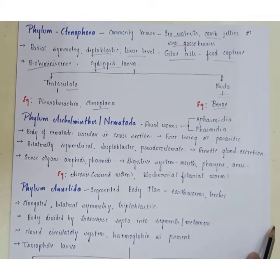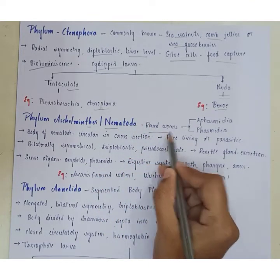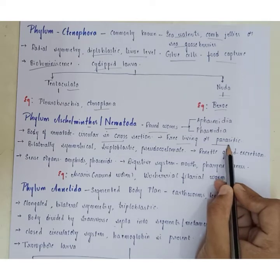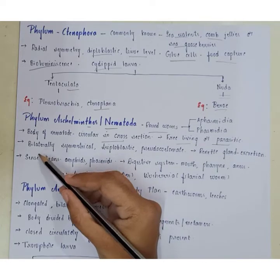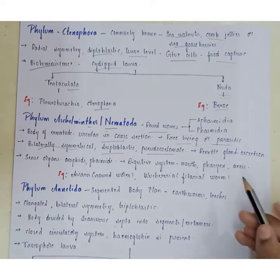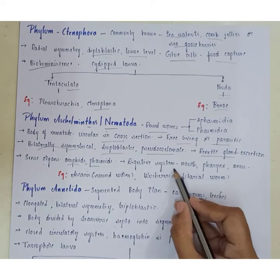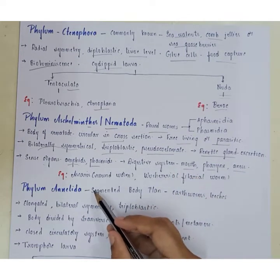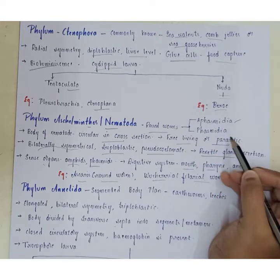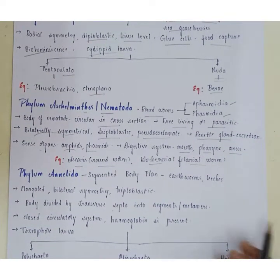Phylum Aschelminthes, also called Phylum Nematoda, includes roundworms. The body is circular in cross-section. They are free-living or parasitic forms. Body symmetry is bilaterally symmetrical; they are triploblastic pseudocoelomates, meaning a false coelom is present. They contain renette glands for excretion. Sense organs are called amphids and phasmids. The digestive system contains mouth, pharynx, and anus. Examples include Ascaris (common roundworm), Wuchereria (filarial worm). Classified into class Phasmidia and class Aphasmidia.